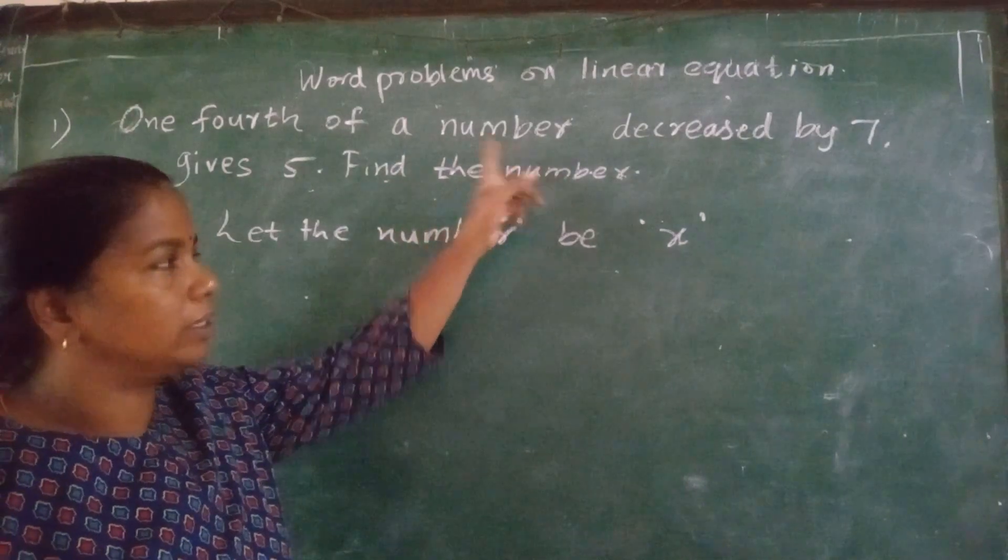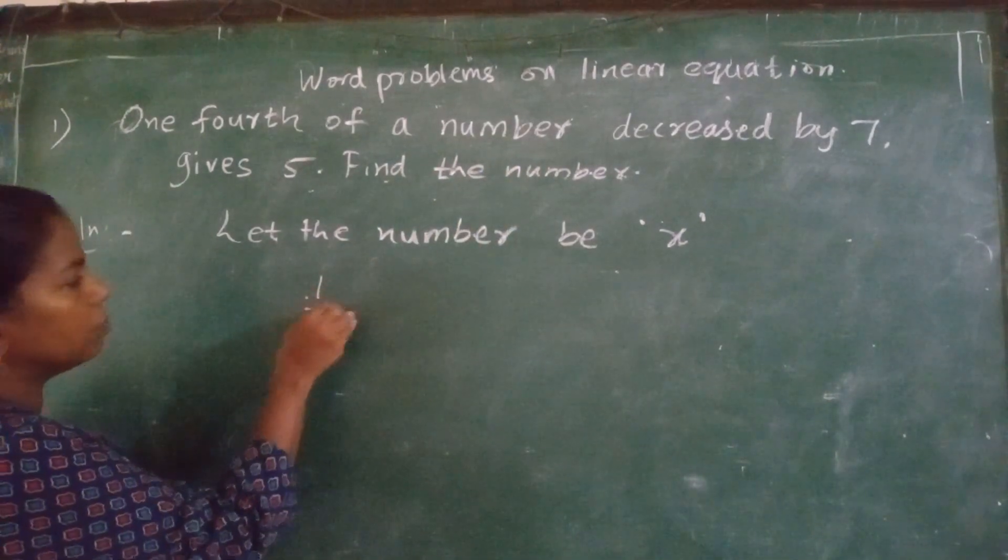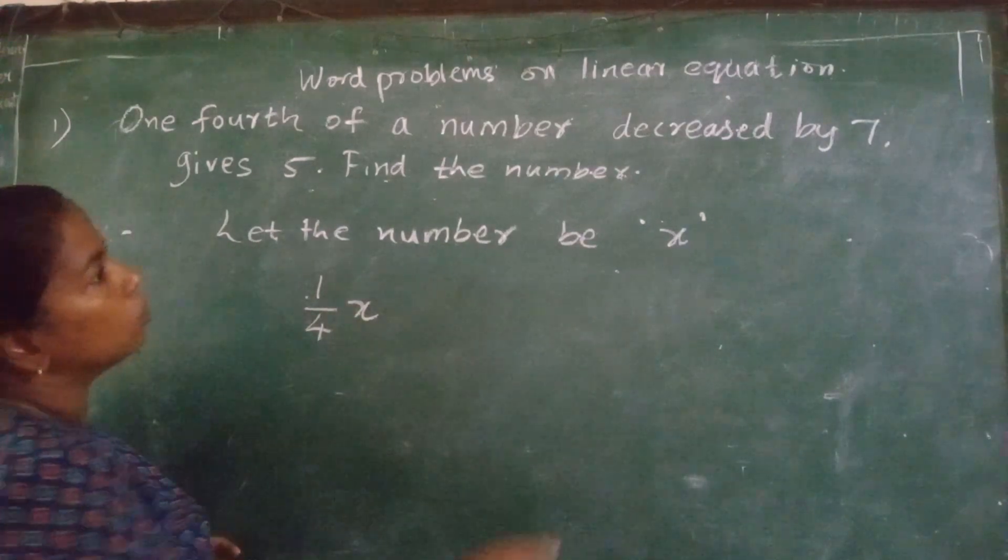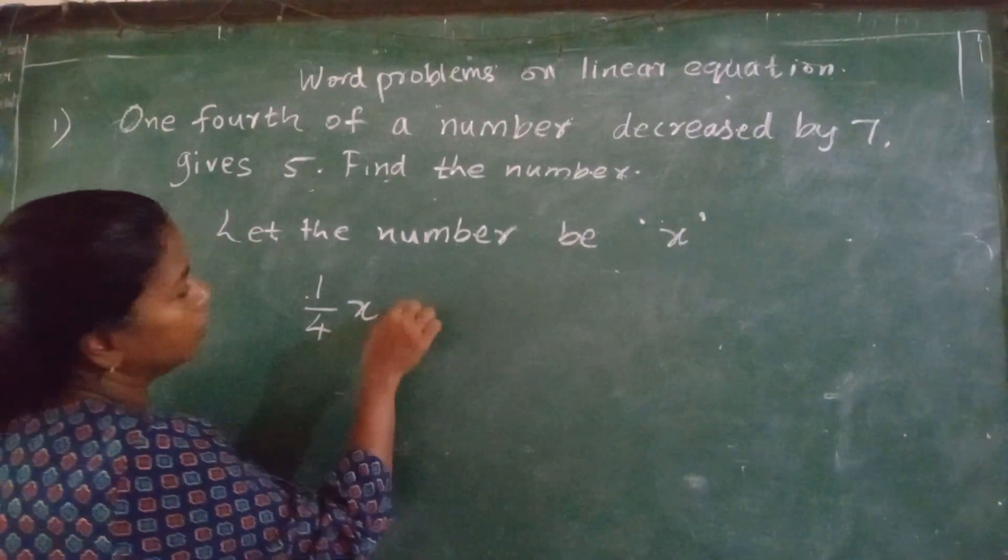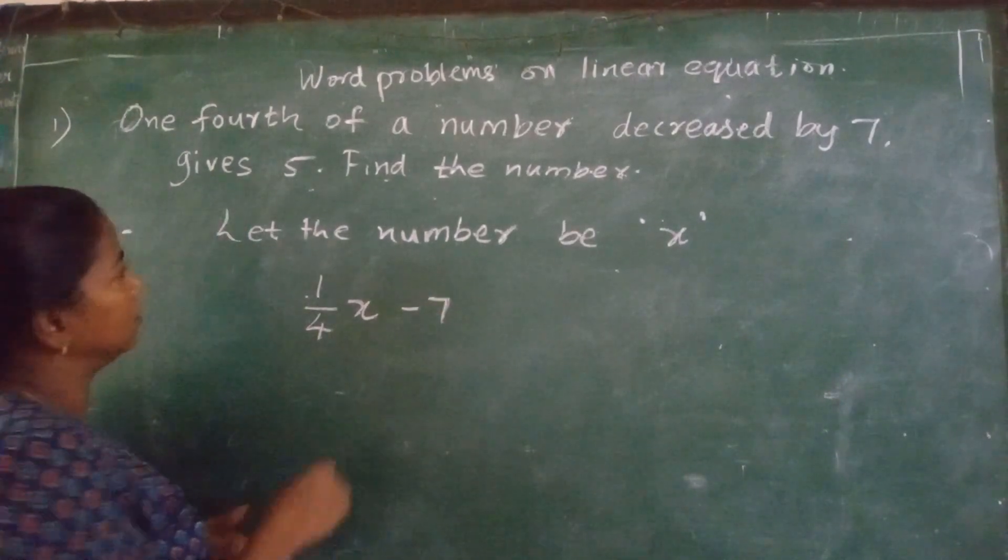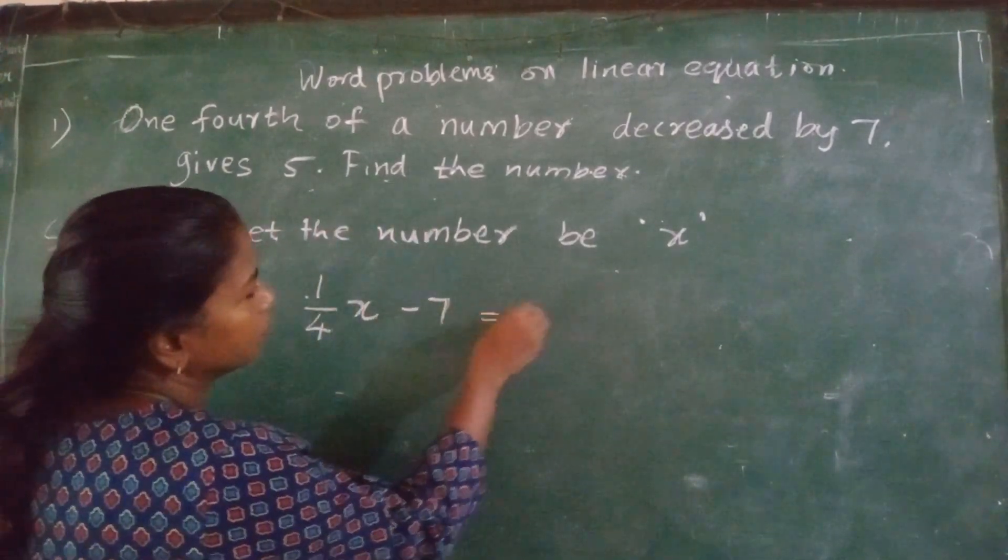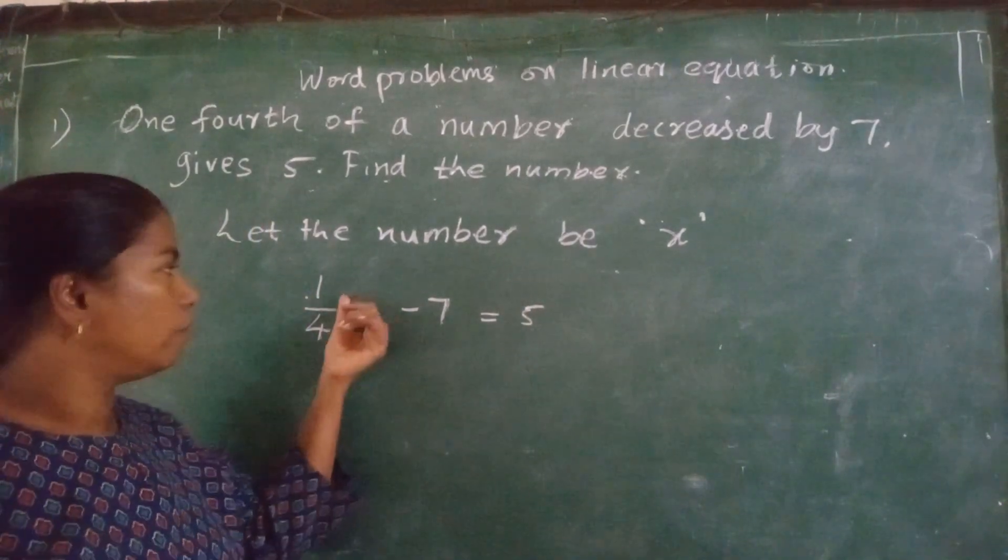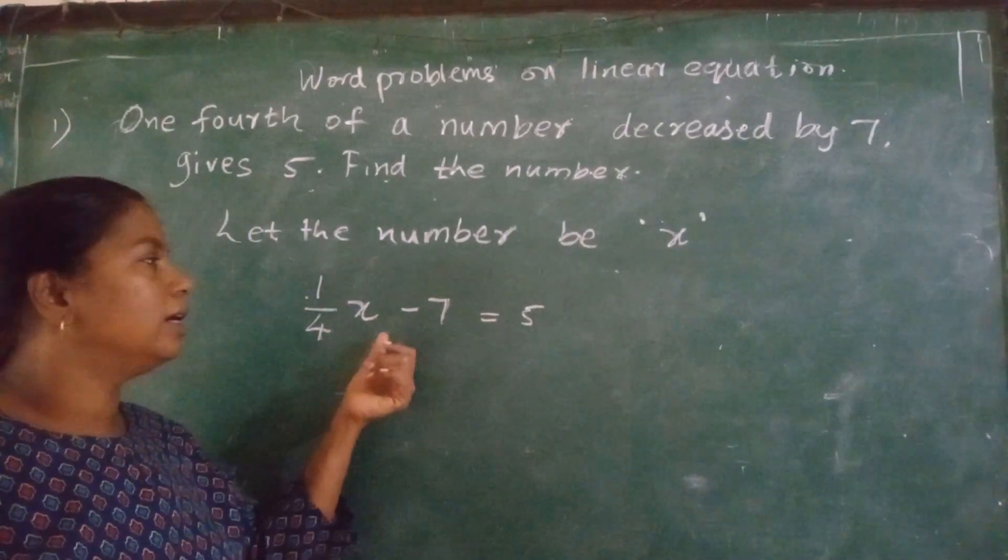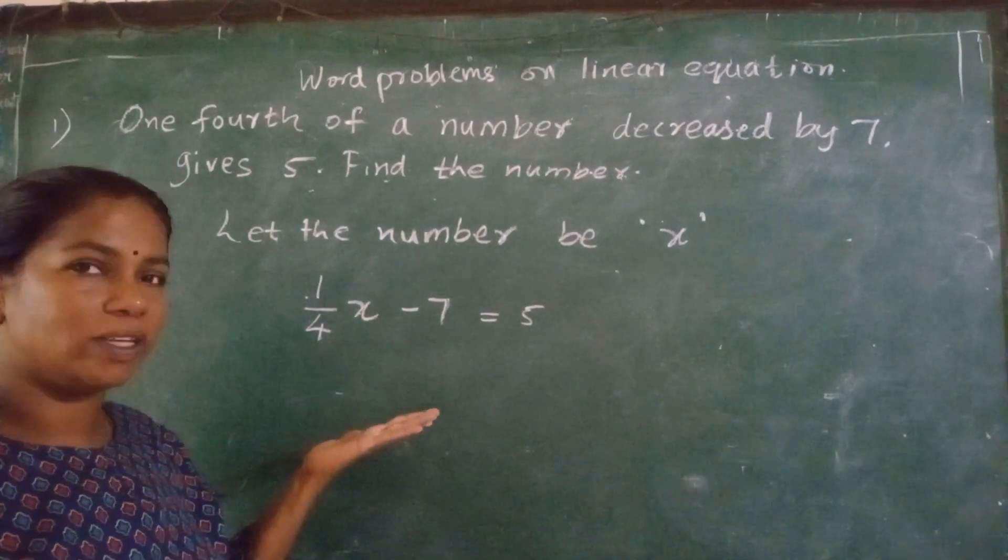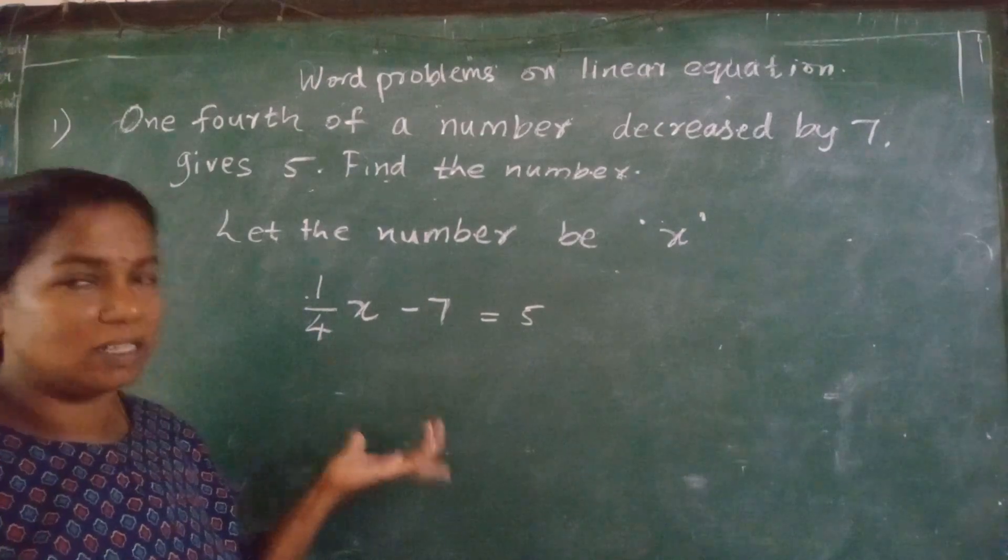One-fourth of a number. That is 1 upon 4. One-fourth of a number. Decreased by 7. Minus 7. Decreased means subtract. Minus 7 gives 5. It will give 5. One-fourth of a number decreased by 7 will give you 5. Got the equation? You have to frame the equation. After that, you have to solve it.